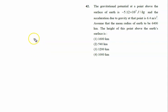The gravitational potential at a point above the surface of the earth. This is the surface of the earth, and there is a height h.